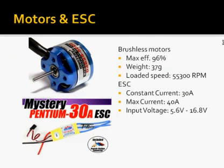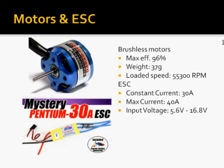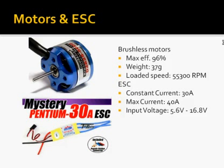Originally we used brushed motors but noticed their efficiency wasn't good, so we decided to switch to brushless motors. The brushless motors we're using have a maximum efficiency of about 96%, weigh about 37 grams, and can reach up to 55,300 RPM. Previously with the brushed motors we used MOSFET amplifiers, but those got way too hot — even with heat sinks and thermal paste they still ran extremely hot. So we decided to use electronic speed controllers paired with the brushless motors instead.